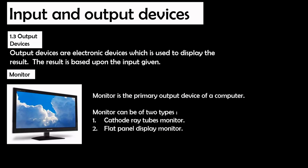Now let's discuss output devices. The definition states that these are electronic devices used to display the result, where the results are purely based upon the given input. An example is the monitor, which is the primary output device for any computer. Monitors can be of two types: cathode ray tube monitors and flat panel display monitors.